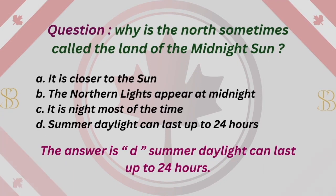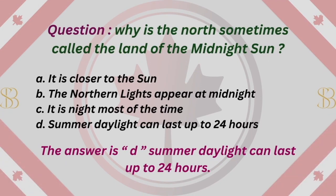Question: Why is the North sometimes called the land of the midnight sun? A. It is closer to the sun. B. The northern lights appear at midnight. C. It is night most of the time. D. Summer daylight can last up to 24 hours. The answer is D. Summer daylight can last up to 24 hours.